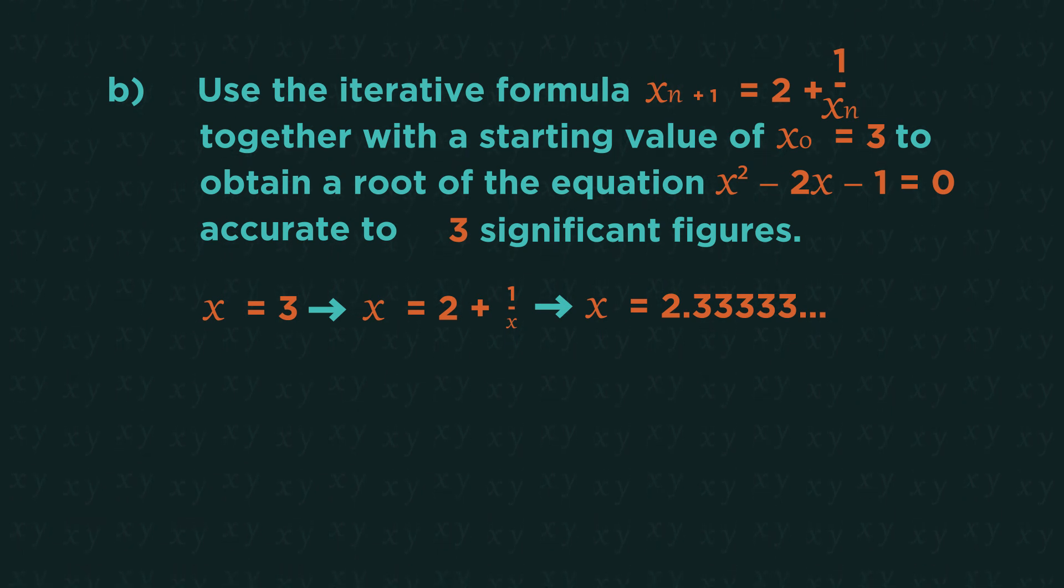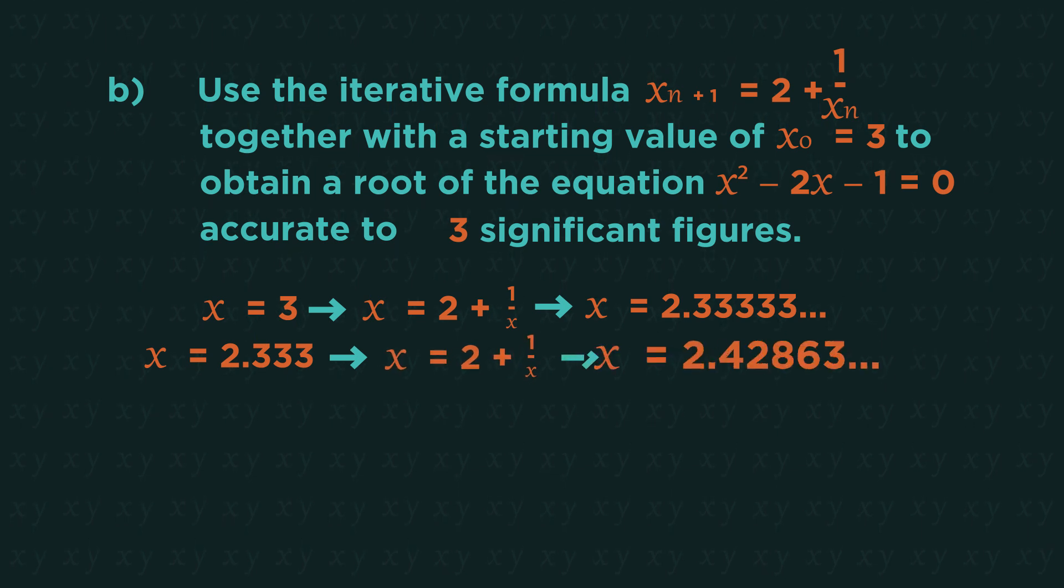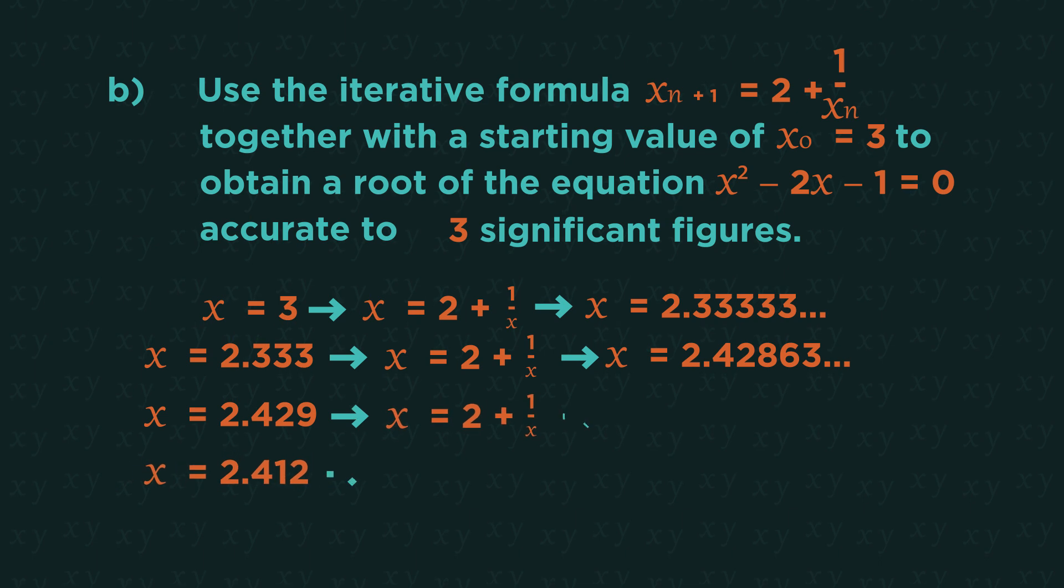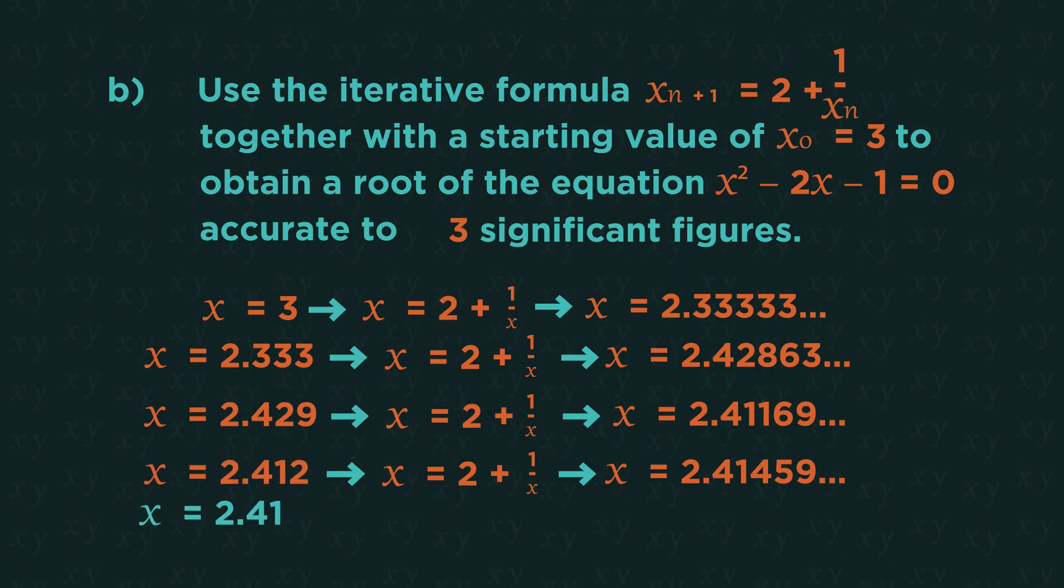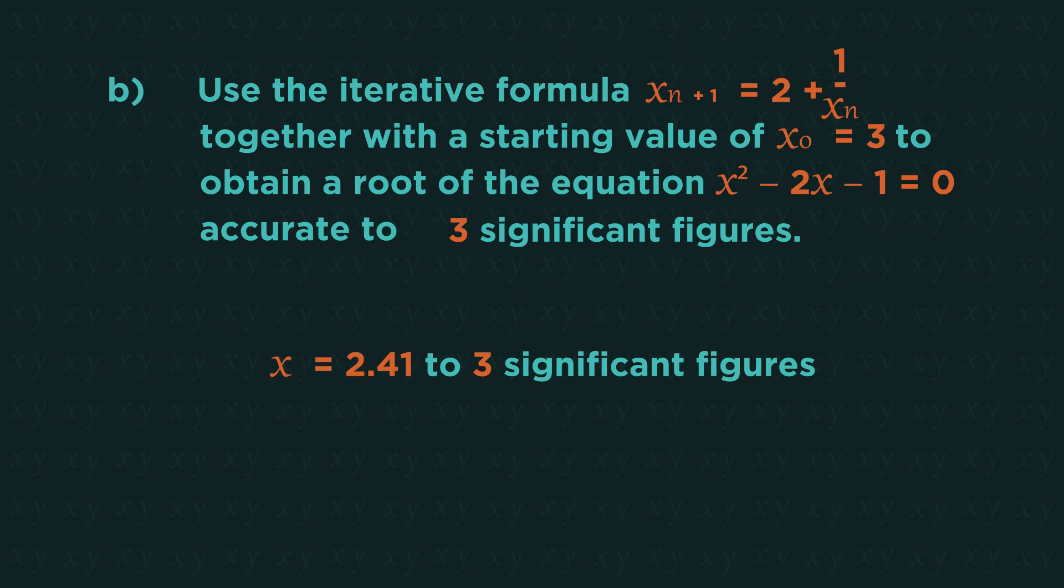This isn't the same as 3. So now, we put 2.333 into the formula. And keep going until the input and output are the same to 3 significant figures. Rounded to 3 significant figures, 2.41 goes in and 2.41 comes out. This is the final answer.